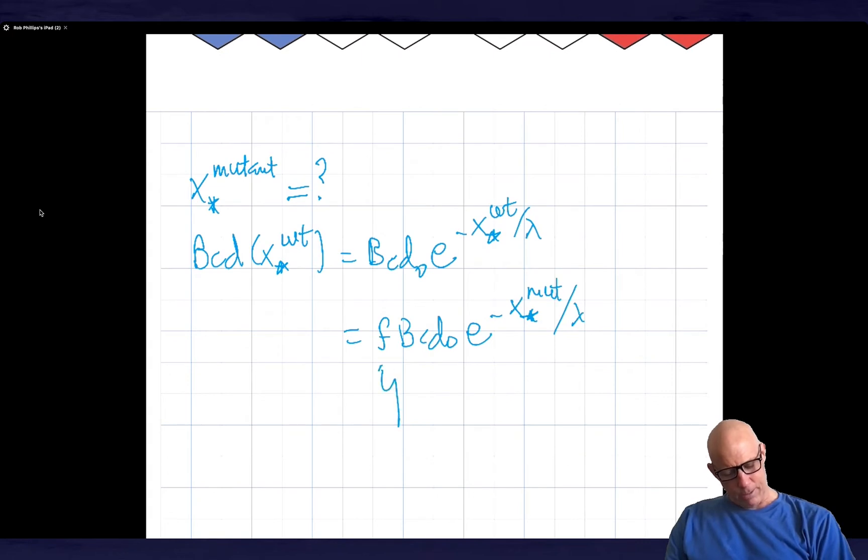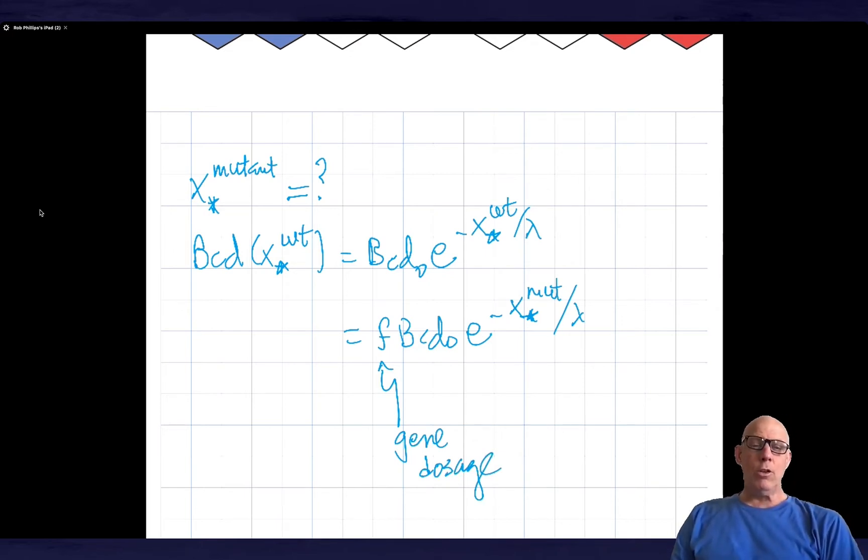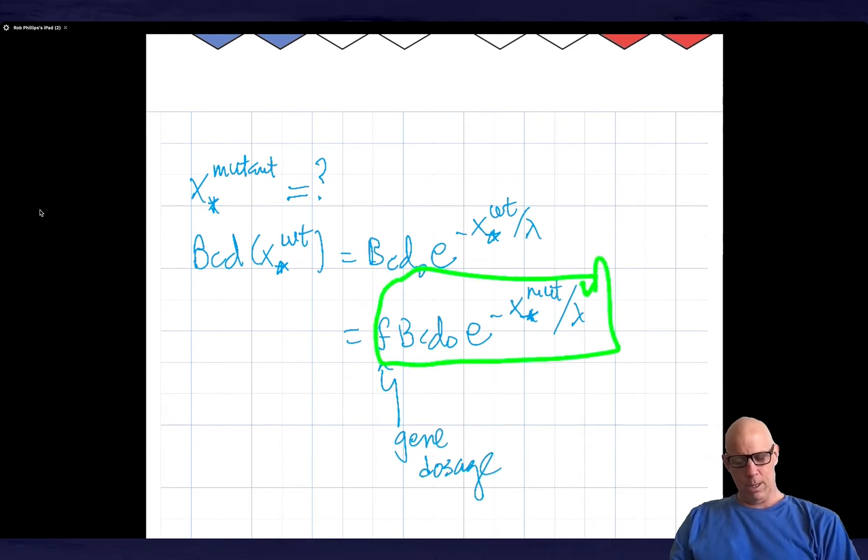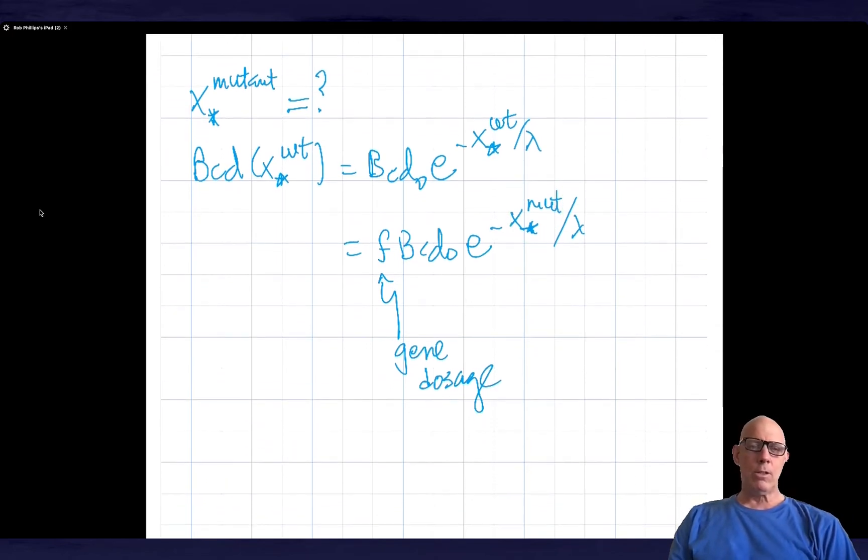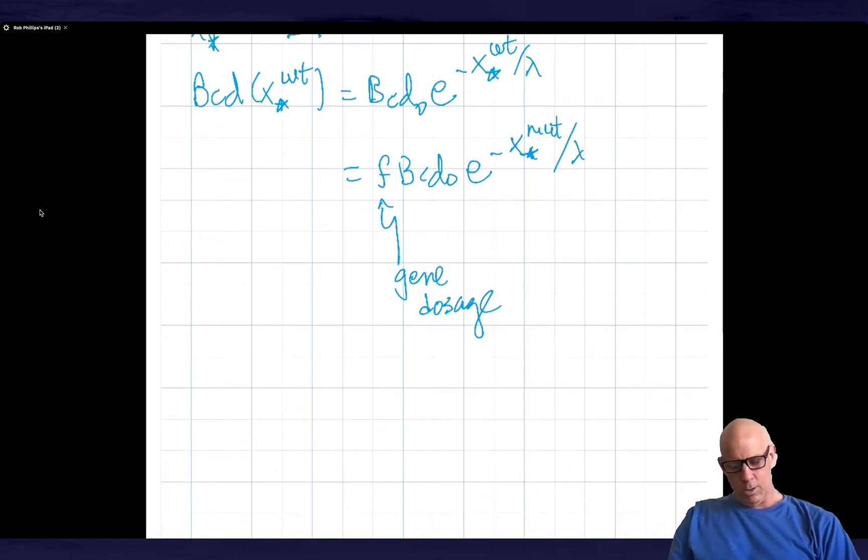What is this? This f factor is the gene dosage. So what's the logic of what I'm saying? The logic is that if I actually create a new profile described by this equation, then it's still got the same exponential profile, but the magnitude as associated with this pre-factor is different. And the result is that there will be a different position, what I'm calling x star mutant. And so our goal is to find x star mutant in terms of the original bicoid of 0. So you could think of that this way. So I have an expression which is 1 over e to the x star wild type divided by lambda is equal to f times 1 over e to the x star mutant divided by lambda. How did I do that? I just remembered that e to the minus something is the same as 1 over e to the something.